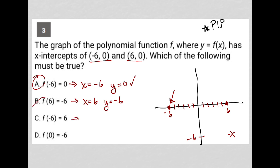And c would mean when x is negative 6, y is positive 6, which again would take us up here, which is also not true.